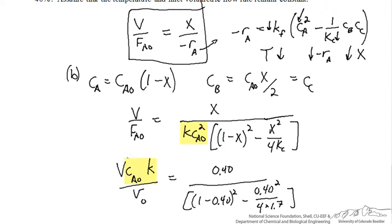I can plug in the value of 0.40 for the conversion and 1.7 for Kc. I've brought over KcA0 terms from the denominator of the right-hand side to the numerator of the left-hand side, and expressed FA0 in terms of CA0 times the initial volumetric flow rate. I get this collection of terms. This collection is known as a Damköhler number for this reaction, and it's dimensionless, and it turns out to equal 1.2.